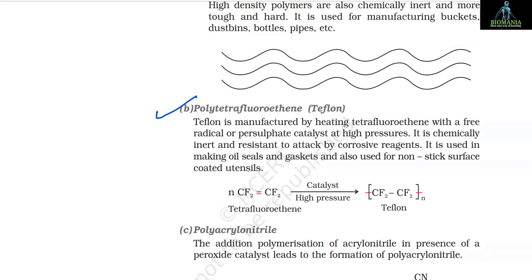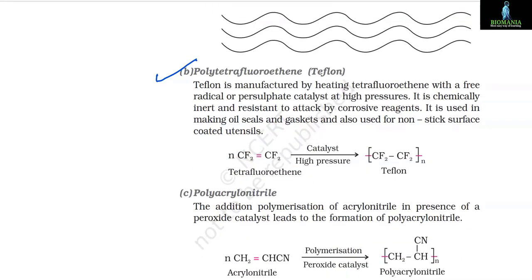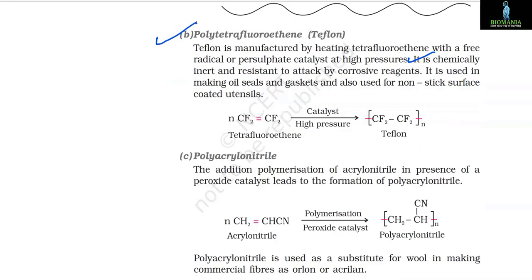B. Polytetrafluoroethene (Teflon): Teflon is manufactured by heating tetrafluoroethene with a free radical or persulfate catalyst at high pressures. It is chemically inert and resistant to attack by corrosive reagents. It is used in making oil seals and gaskets and also for non-stick surface coated utensils. nCF₂=CF₂ (tetrafluoroethene) → (–CF₂–CF₂–)ₙ (Teflon).